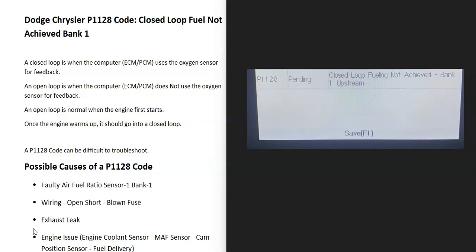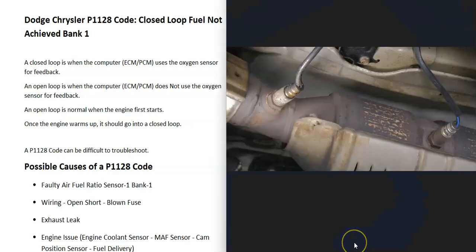What does this mean? There are oxygen sensors located on the exhaust, and they do two things. The first thing they do is monitor the catalytic converter, and then the second thing they do is monitor how much oxygen was burnt off during combustion. They report this information back to the computer, which uses it to adjust the air-fuel ratio mixture going into the cylinders.